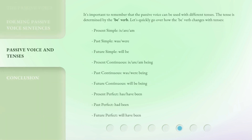It's important to remember that the passive voice can be used with different tenses. The tense is determined by the 'be' verb. Here's how the 'be' verb changes with tenses: Present simple — is/are/am. Past simple — was/were. Future simple — will be. Present continuous — is/are/am being. Past continuous — was/were being. Future continuous — will be being. Present perfect — has/have been. Past perfect — had been. Future perfect — will have been.